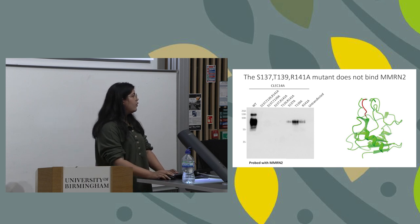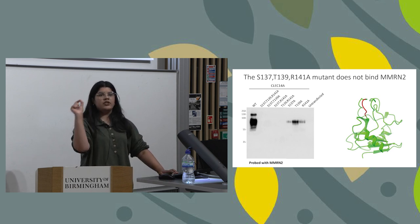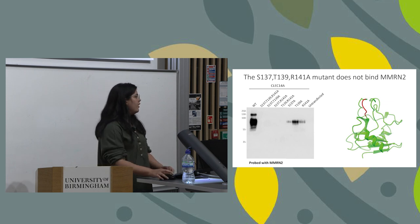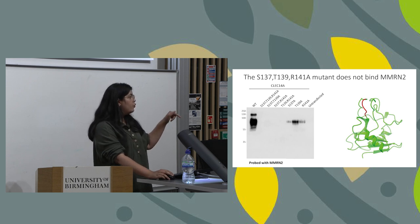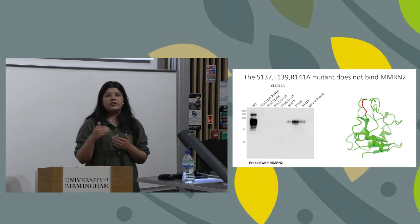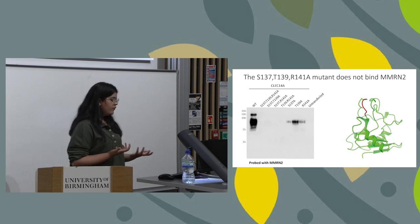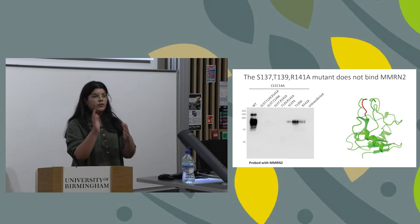We found that all of the double mutants were also unable to bind to multimerin 2. We then made single point mutations of the residues within the triple mutant. The single mutants were able to bind to multimerin 2, but the bands were quite small and weak compared to wild-type CLEC14A — showing they can bind but with a much reduced capacity. This confirms that this region of the CLEC14A C-type lectin domain is critical for binding with multimerin 2.